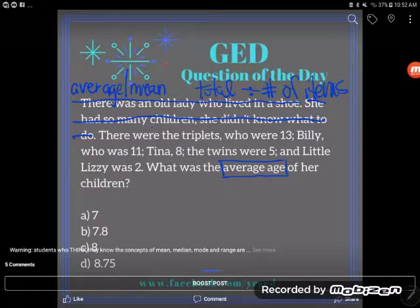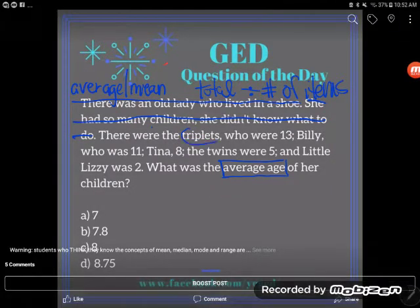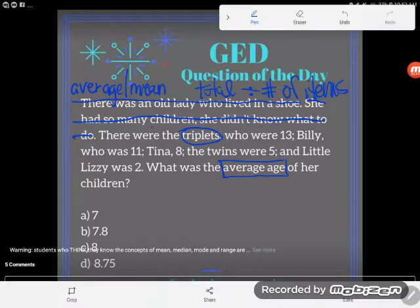So let's take a look here at what these numbers mean so we can make sure that we do this problem the correct way. So the first thing I see here is that we had triplets. Well what is a triplet? Is a triplet just one child? No, obviously a triplet is a set of three children who were all born at the same time, meaning they're all gonna have the same age.